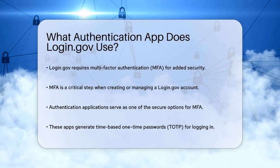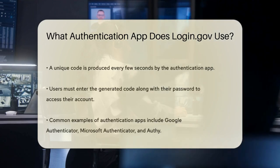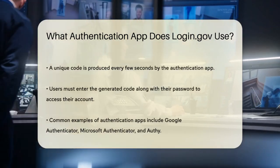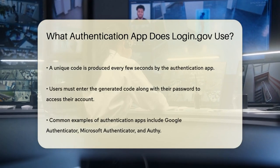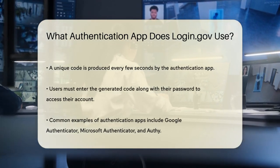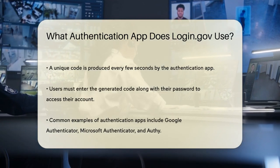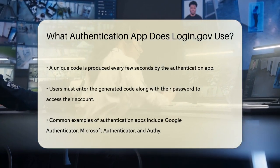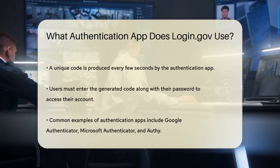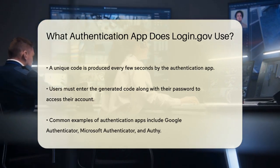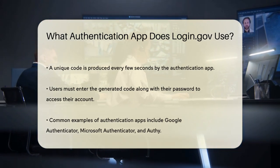Login.gov offers several authentication methods, and one of the more secure options is using an authentication application. The authentication app you can use with login.gov is typically a time-based one-time password, or TOTP, generator. This type of app generates a unique code every few seconds, which you need to enter along with your password to login. Some popular examples include Google Authenticator, Microsoft Authenticator, and Authy.